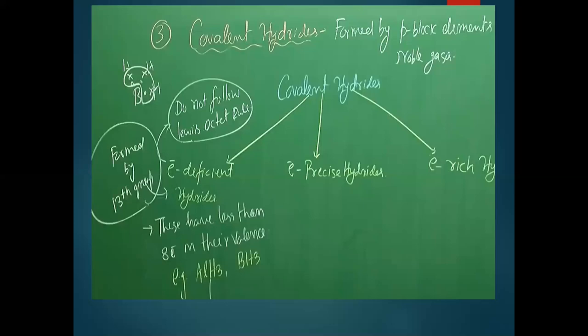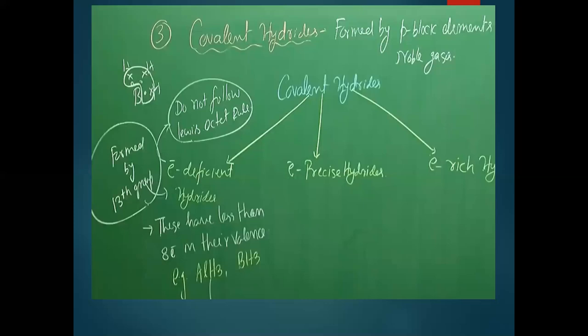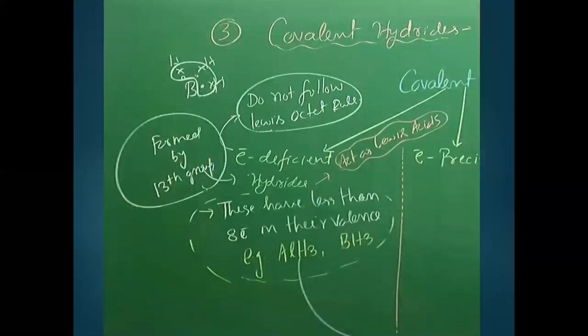Because electron deficient hydrides tend to accept electrons, they always exist in the form of dimers to compensate for the electron deficiency. We will study the structures of these dimers in the next video.